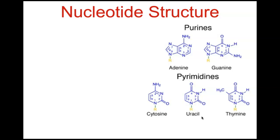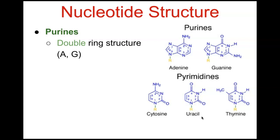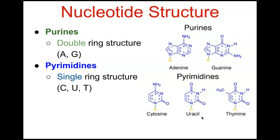Looking further at nucleotide structures: adenine and guanine are considered purines, while cytosine and thymine are pyrimidines in the DNA molecule. Uracil is found in RNA. Purines are double-ring structures and pyrimidines are single-ring structures. You can see the double rings and the single rings forming these nitrogenous bases.